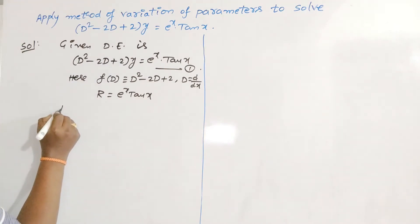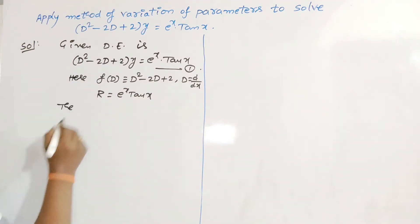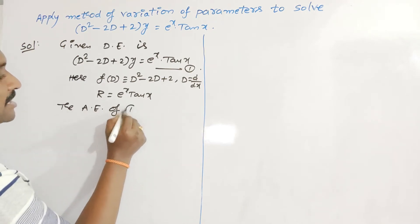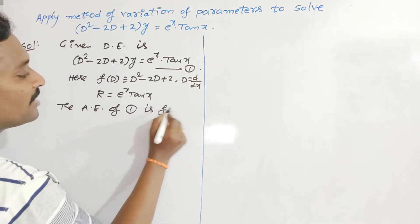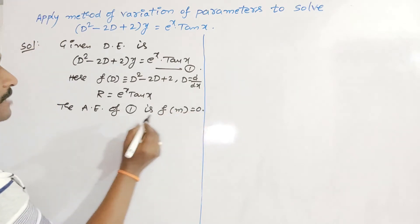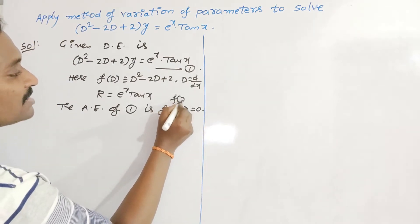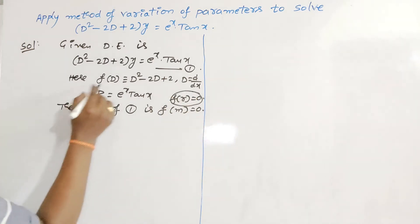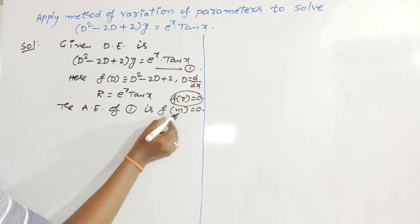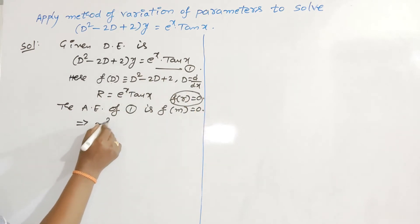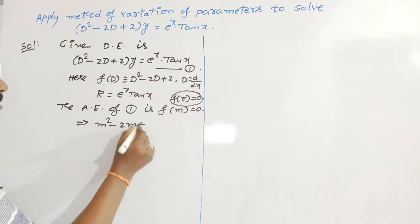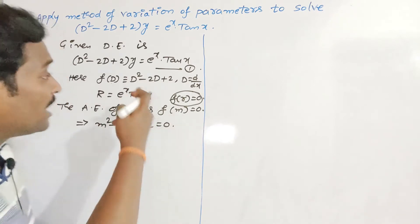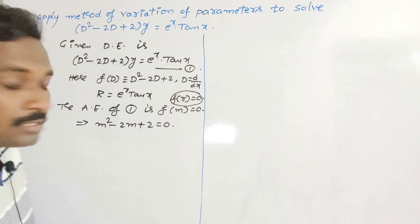To find the complementary function, we write the auxiliary equation. The auxiliary equation is f(m) = 0, so replacing D by m gives m² - 2m + 2 = 0, or equivalently r² - 2r + 2 = 0.